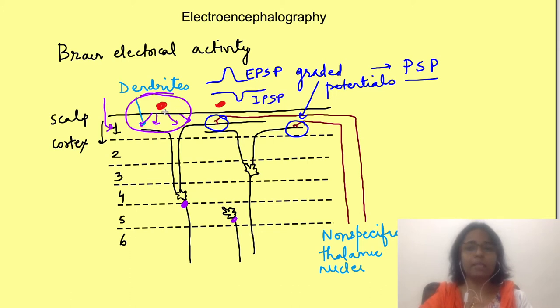EEG electrodes pick up these excitatory and inhibitory post-synaptic potentials that are near the electrodes, and the magnitude of voltage recorded is a sum of these EPSPs and IPSPs.